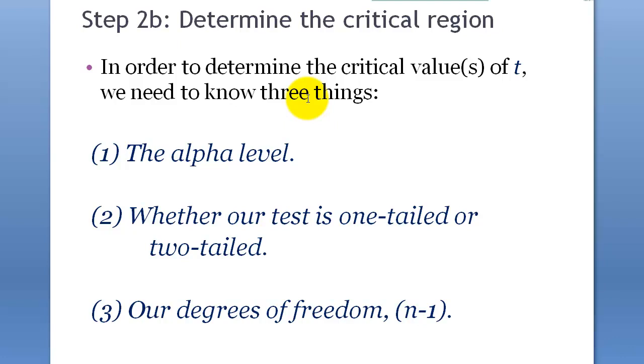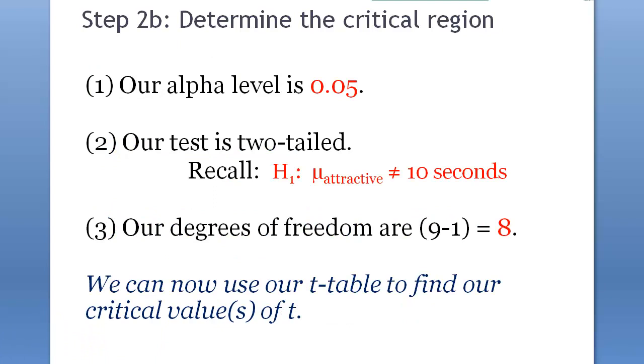Now, as in z-test, in t-test as well, we need to set up the critical values or the alpha level, the t lines. So, alpha level is 0.05. And it's going to be two tails. So, on each side, it's going to be 0.025. And degree of freedom, that's part of the formula, so we have to know that, but we'll get back to that later.